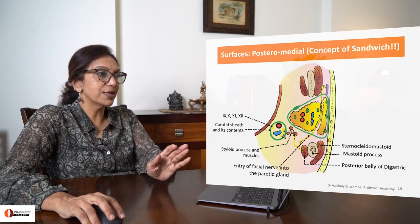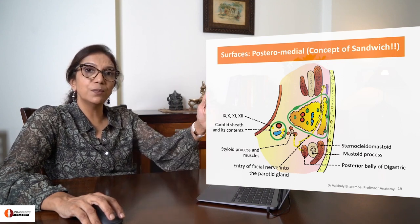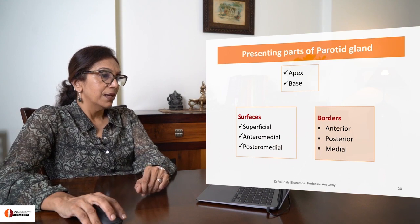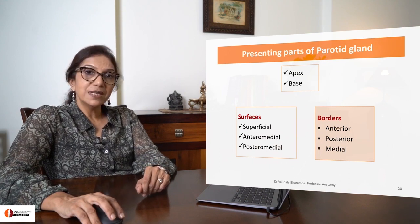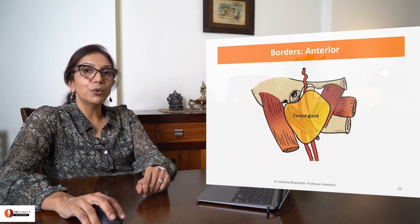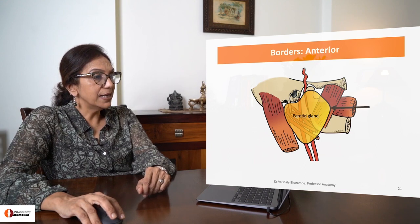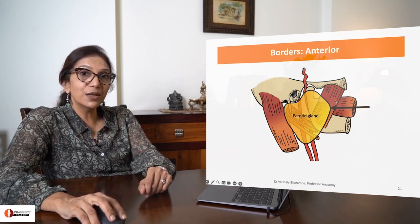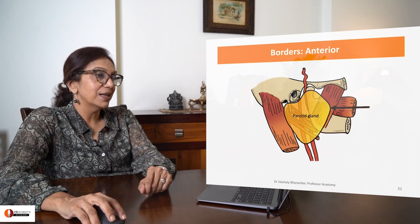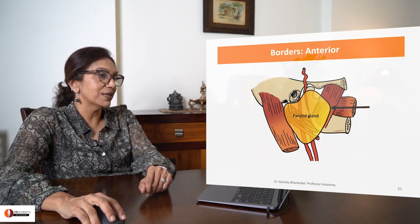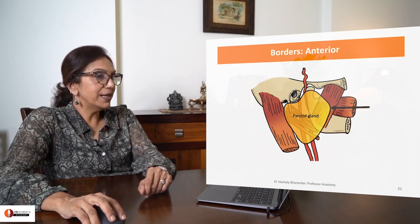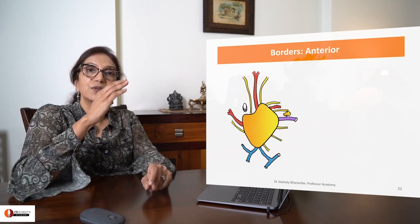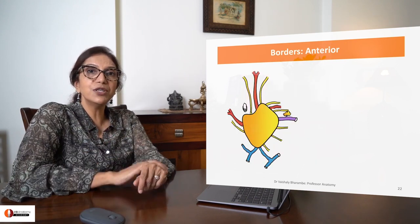We have done the superficial surface, anteromedial surface, and posteromedial surface. Let's talk about the borders now. It has an anterior border which you can see is resting on the masseter muscle. The anterior border is seen resting on the masseter, and a number of structures are emerging from it.